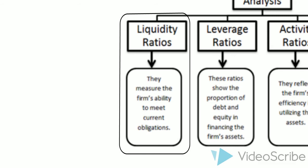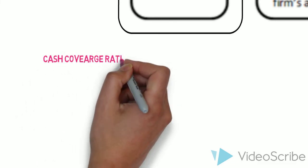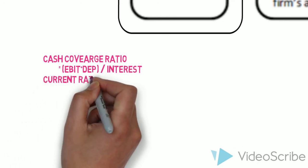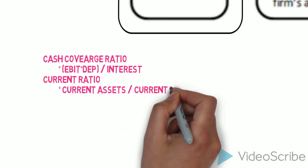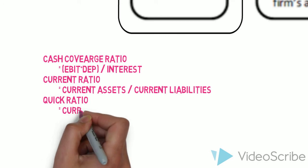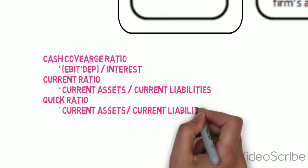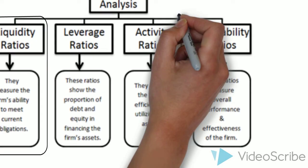A: Cash coverage ratio shows the amount of cash available to pay interest. B: The current ratio measures the amount of liquidity available to pay for current liabilities. C: Quick ratio measures the amount of liquidity available to pay for current liabilities excluding inventory.